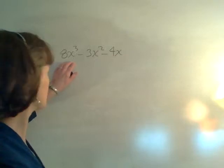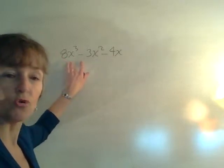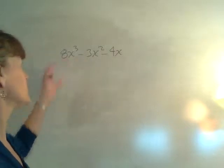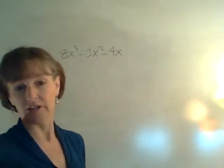A term is a product of constants and variables, and the variables will be raised to whole number exponents. If the variable has a fractional exponent or a negative exponent, then technically you do not have a polynomial.